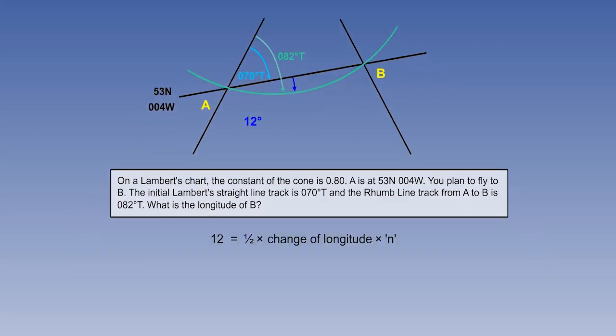Our equation is that half chart convergence equals half change of longitude times sine of the parallel of origin. The question tells us that the constant of the cone is 0.8. This is another term for little n, or the sine of the parallel of origin. Rearrange the equation to make the change of longitude the subject. And the change of longitude works out at 30 degrees.